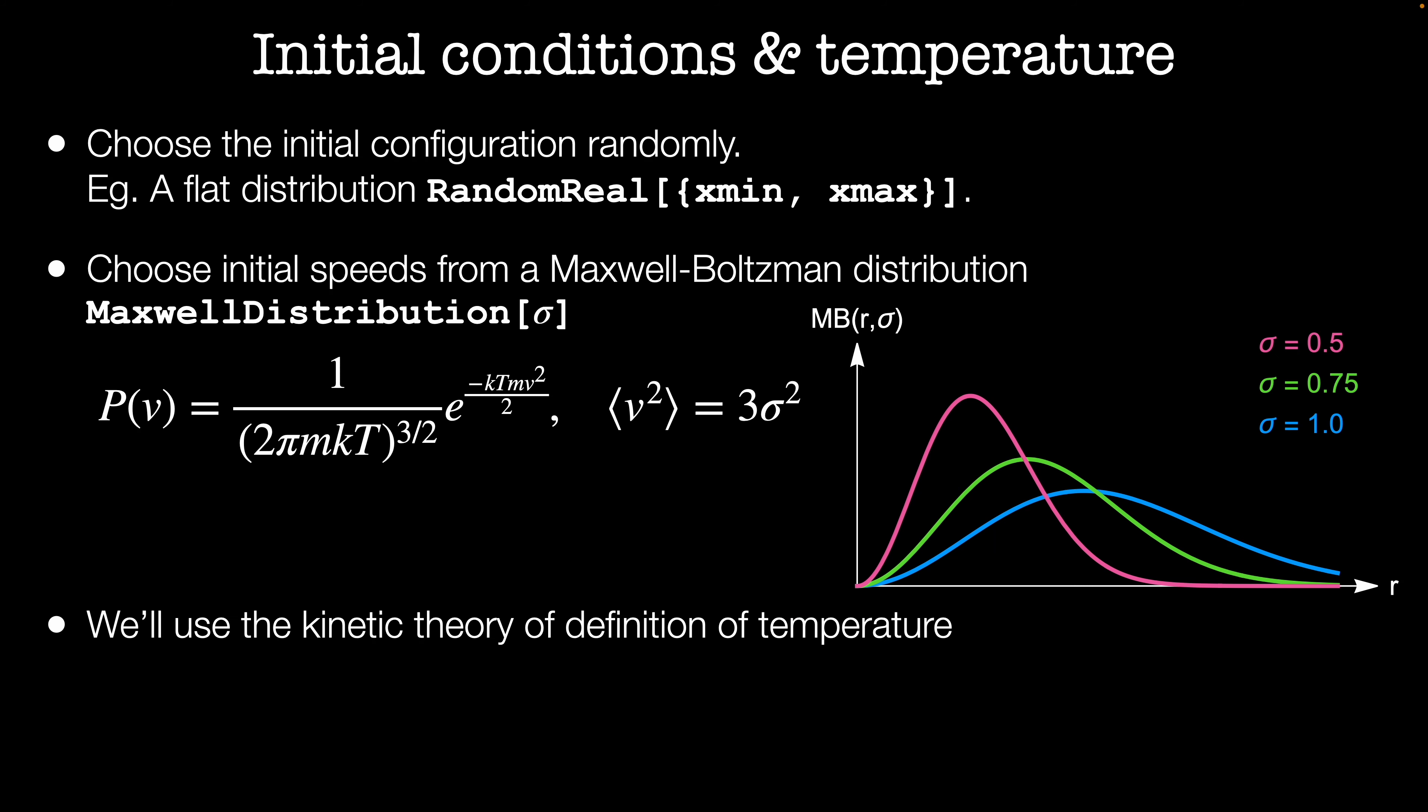Picking velocities from this distribution will statistically give us a system with a fixed average kinetic energy. This is related to the temperature of the system such that the average squared velocity is equal to three-halves kT.